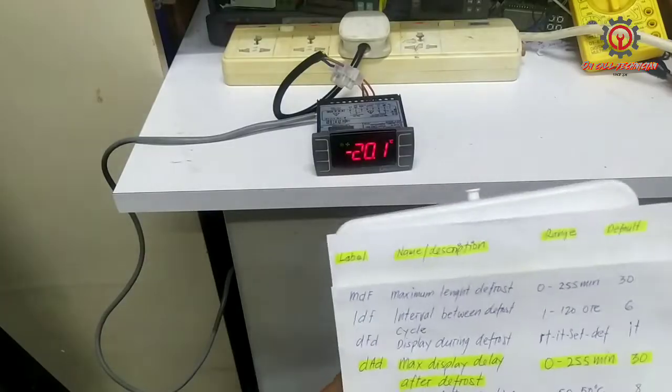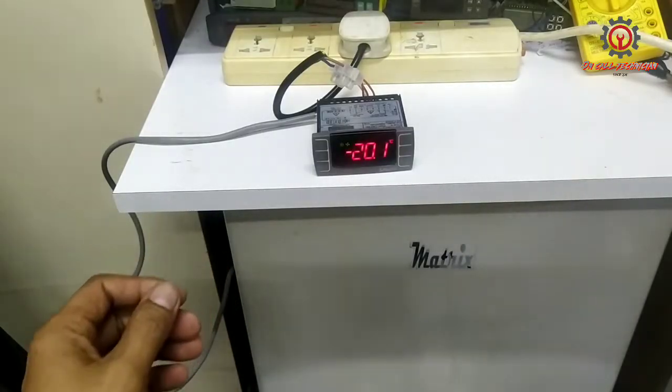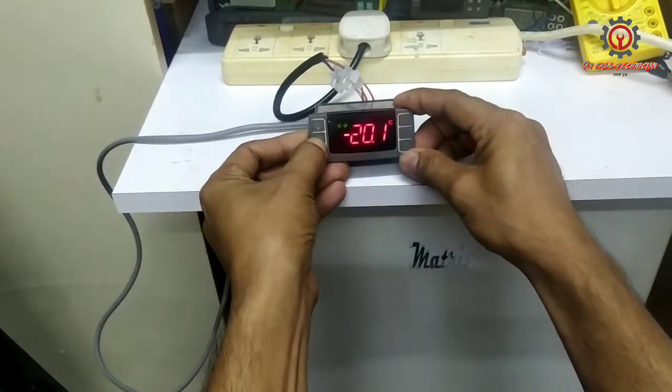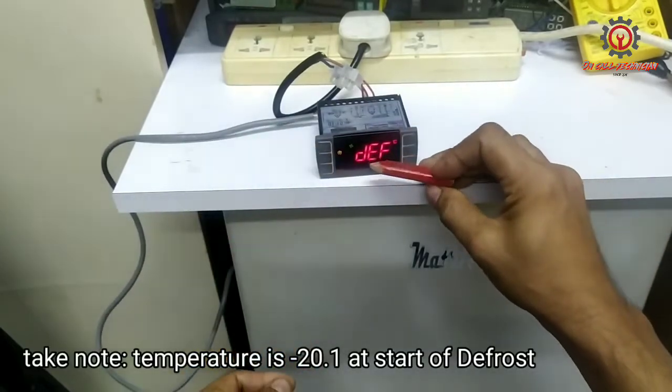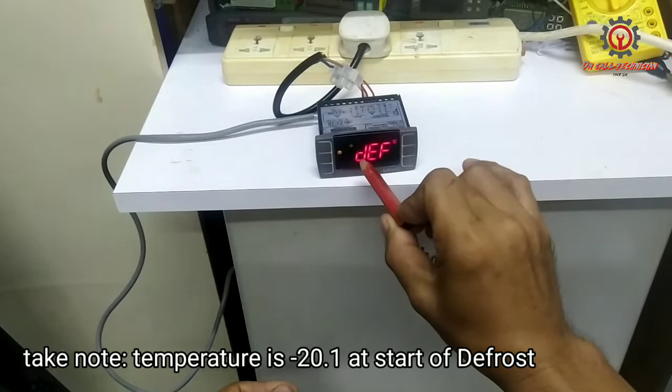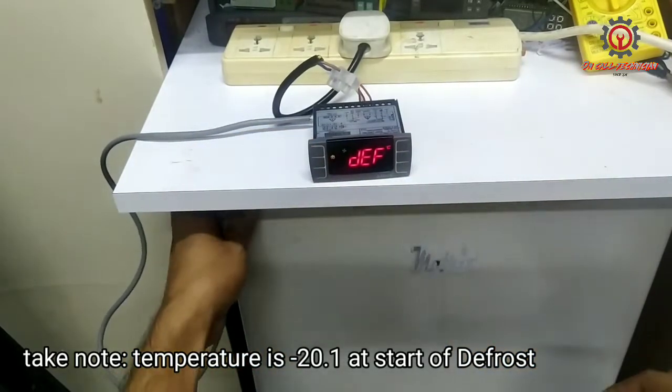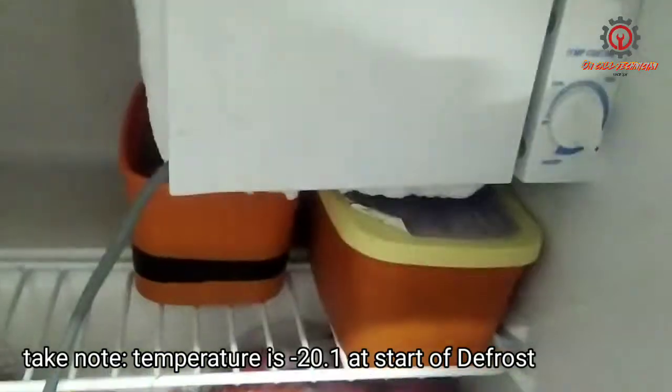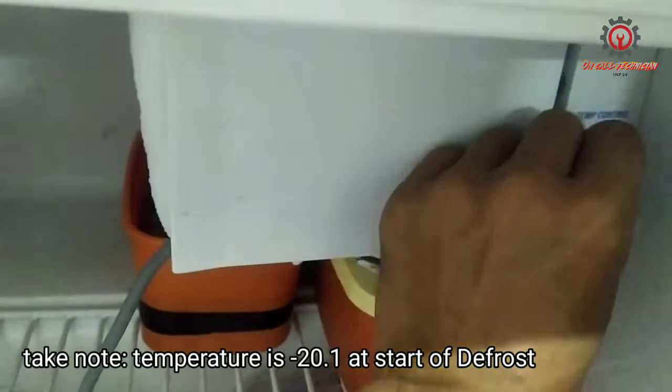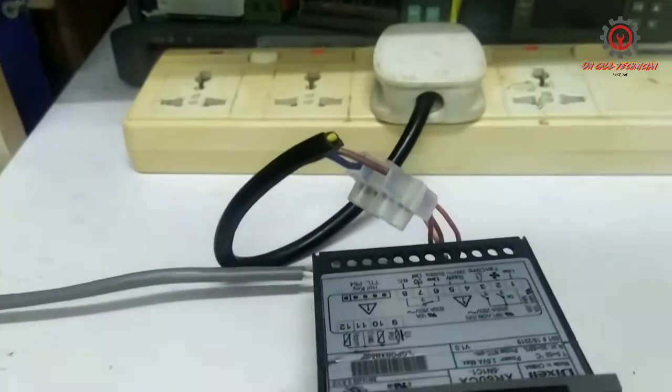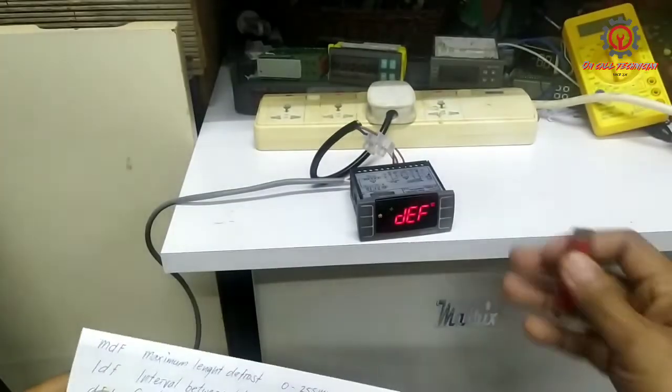I'm going to show you during defrosting. If I set this to manual defrost, DEF appears. We began defrosting at negative 20. This mini fridge is operated by thermostat. I'm going to turn off the thermostat. When defrosting, the compressor will shut off and this control is for displaying only.